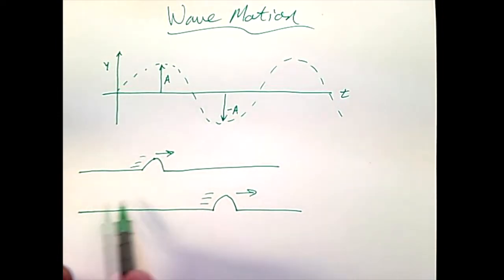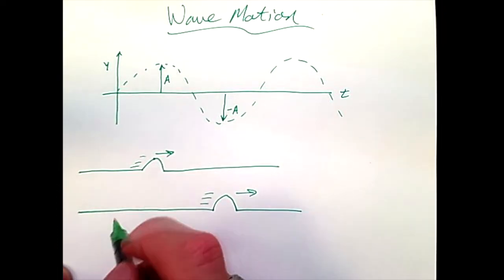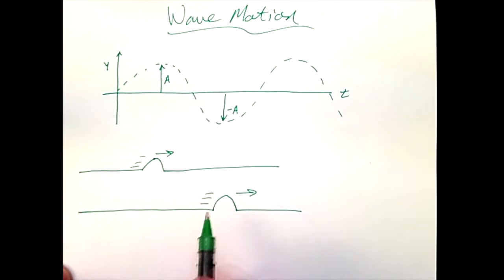But when we describe this wave pulse moving through the rope, we describe this as a motion, as a linear motion moving from left to right. But what is moving from left to right? Because it isn't the rope.